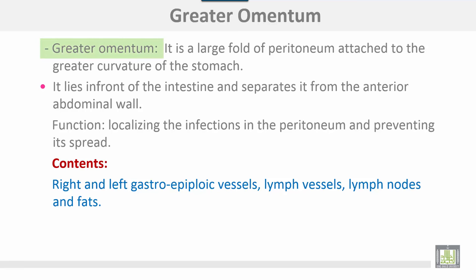The greater omentum is a large fold of peritoneum attached to the greater curvature of the stomach. It lies in front of the intestine and separates it from the anterior abdominal wall. The function of the greater omentum is to localize infection in the peritoneum and prevent its spread, so sometimes it is called the policeman of the abdomen.